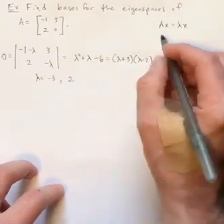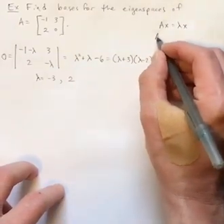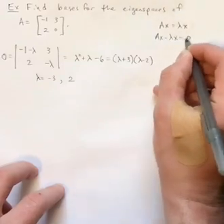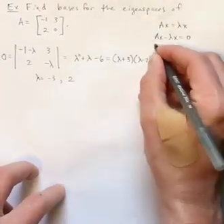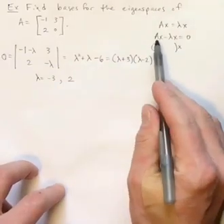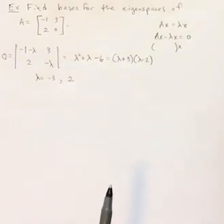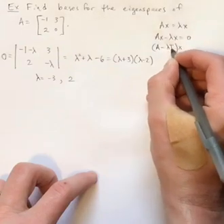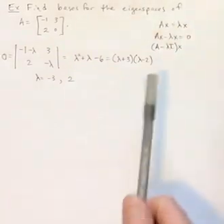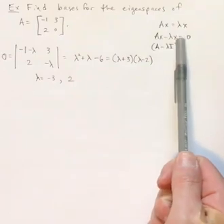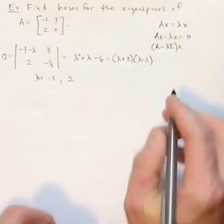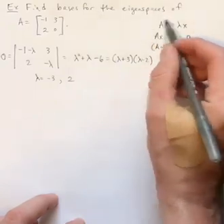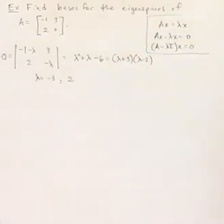What I would suggest is this. This is equivalent to saying A x minus lambda x equals 0, and then if I wanted to factor an x out of that, I can't just put A minus lambda, because that's a matrix minus a scalar. That's not defined. But what I could do is I could write lambda as lambda times i, because if I multiplied lambda times i times x, i times x is just x anyway. So I get this homogeneous equation, A minus lambda i times x equals 0.